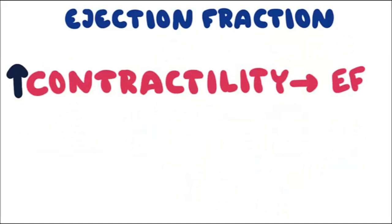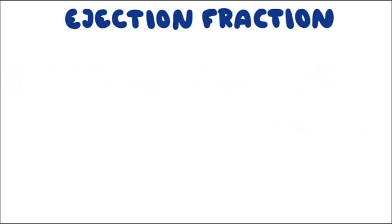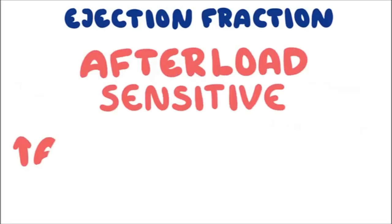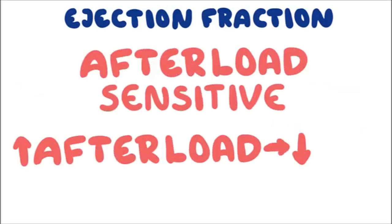Increased contractility increases ejection fraction; decreased contractility decreases ejection fraction. However, we do not have any ideal index of contractility — all three are sensitive to something, and ejection fraction is no exception. Ejection fraction is not an ideal index of contractility because it is afterload sensitive. Increased afterload decreases ejection fraction.